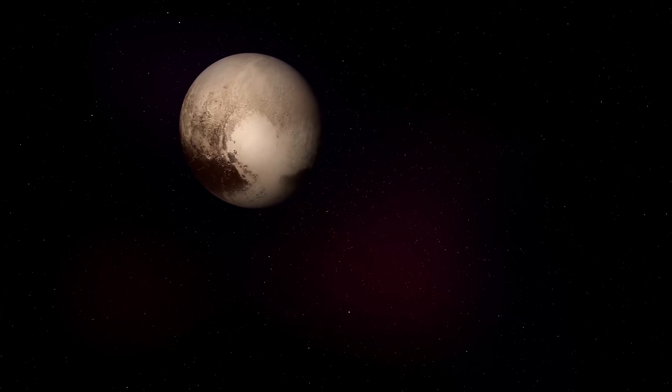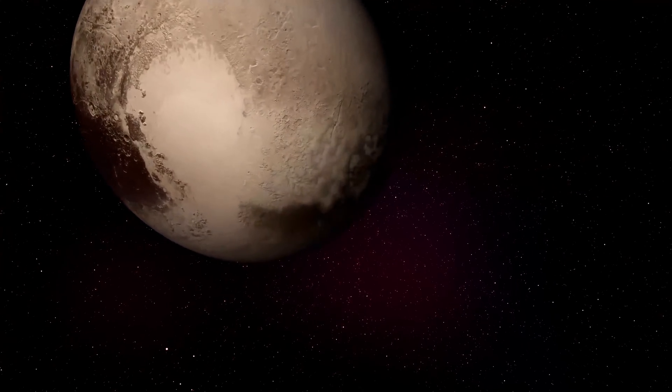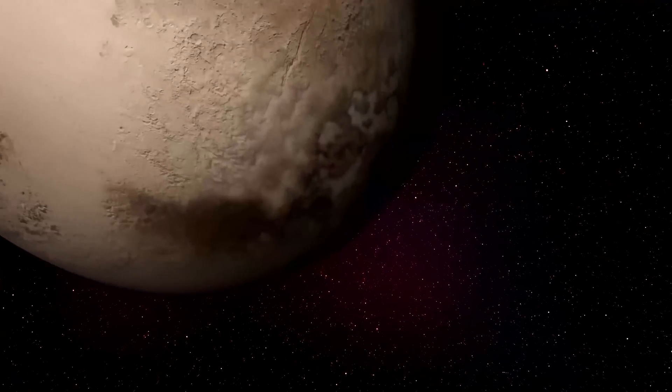For example, when New Horizons passed Pluto four months later, the third stage rocket, Star 48, that propelled New Horizons also passed the orbit of Pluto, on course for a journey out of the solar system.